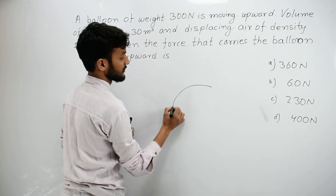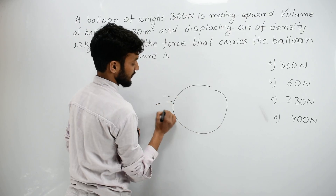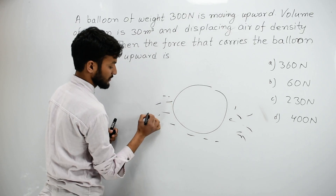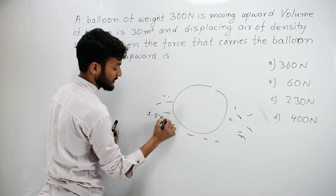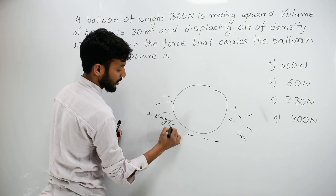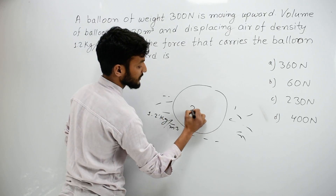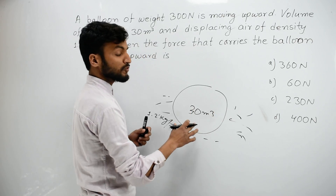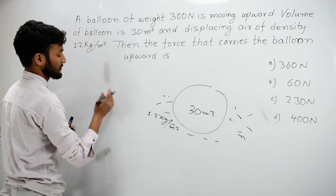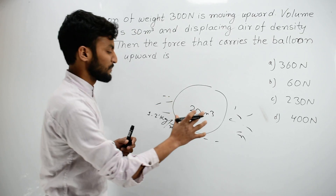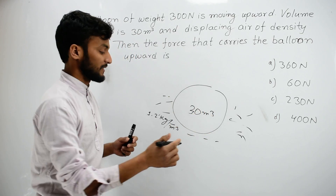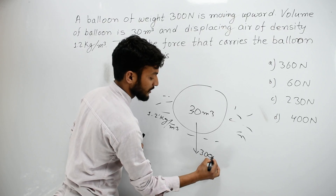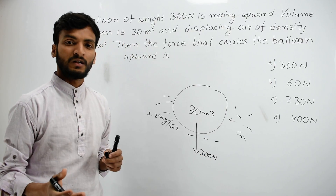The air density is 1.2 kg per meter cubed, and the volume of the balloon is 30 meter cubed. The balloon weight is 300 Newton — this is the force due to gravity. Now the object is in a fluid.